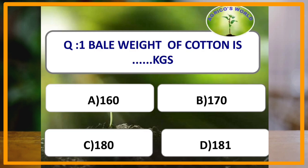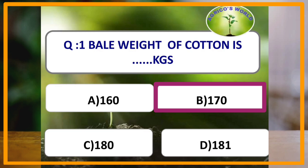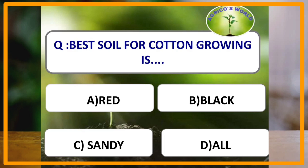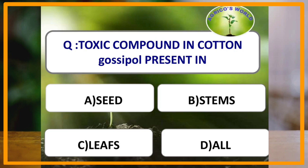One bale weight of cotton is how many kg? One bale weight of cotton is 170 kg, that of jute is 180 kg, and that of mesta is 181 kg. The best soil for cotton growing is black soil, which belongs to the order Vertisol.